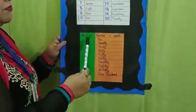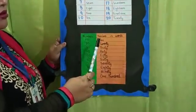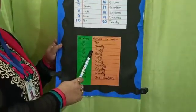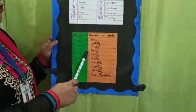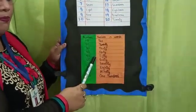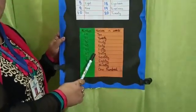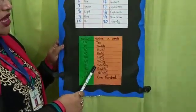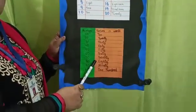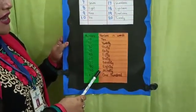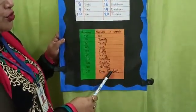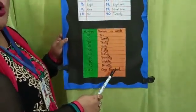We can also learn it as: TEN 10. T-W-E-N-T-Y 20. T-H-I-R-T-Y 30. F-O-R-T-Y 40. F-I-F-T-Y 50. S-I-X-T-Y 60. S-E-V-E-N-T-Y 70. E-I-G-H-T-Y 80. N-I-N-E-T-Y 90. O-N-E-H-U-N-D-R-E-D 100.